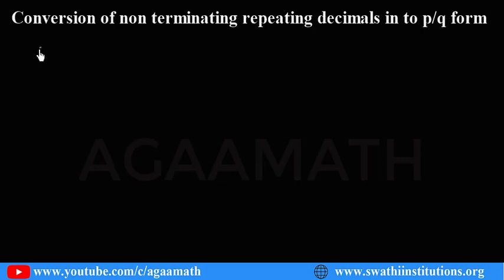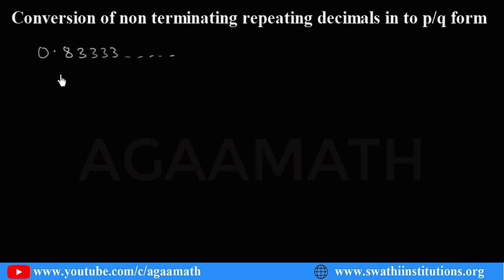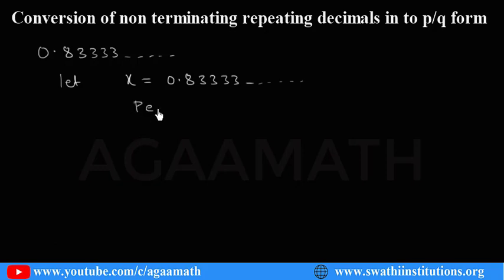We have one more example: 0.83333 and so on. What is the period? It is 3, and periodicity is 1. Let x equal to 0.83333 and so on. How many digits are repeating? Only one digit is repeating, so periodicity is 1.